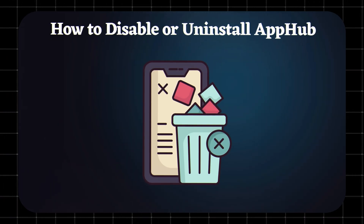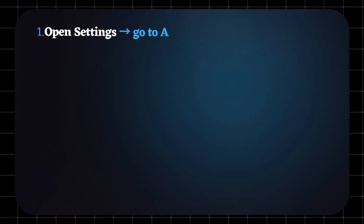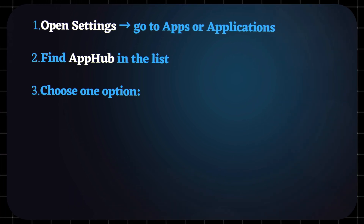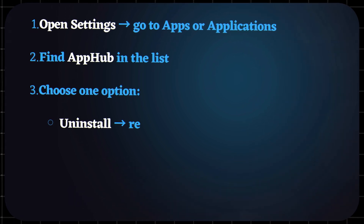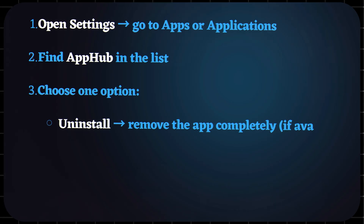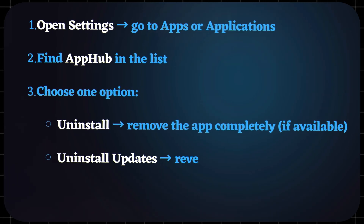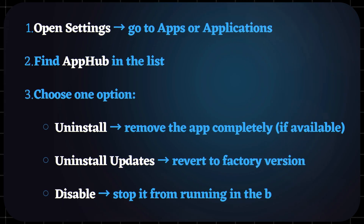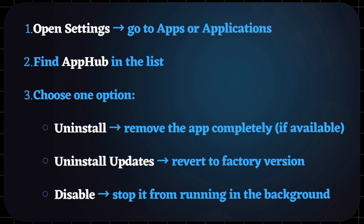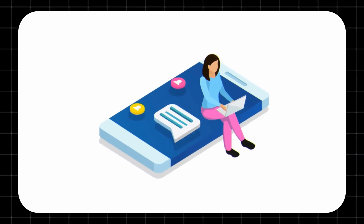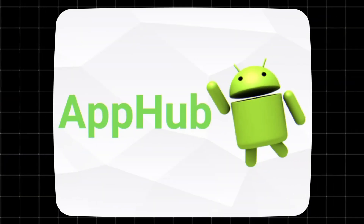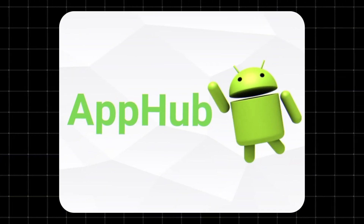How to disable or uninstall AppHub: Open Settings, go to Apps or Applications, find AppHub in the list, then choose one option — Uninstall to remove the app completely if available, Uninstall Updates to revert to the factory version, or Disable to stop it from running in the background.